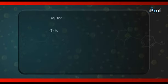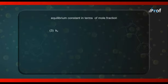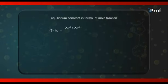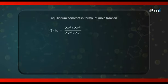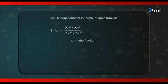The third type of constant is Kx — we call it the equilibrium constant in terms of mole fractions. For that reaction, Kx = (Xc)^n1 × (Xd)^n2 / (Xa)^m1 × (Xb)^m2, where X means mole fraction. So there are three types of equilibrium constants: Kc, Kp, and Kx.